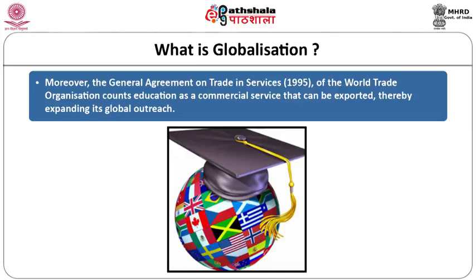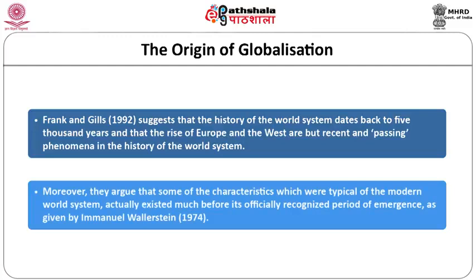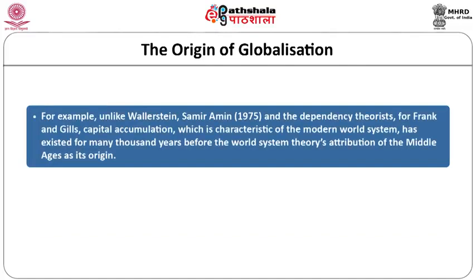Frank and Gill suggest that the history of the world system goes back 5,000 years, and the rise of Europe and the West are but recent and passing phenomena. They argue that characteristics typical of the modern world system actually existed much before its officially recognized period of emergence as given by Immanuel Wallerstein — including capital accumulation, which they say existed for thousands of years prior.